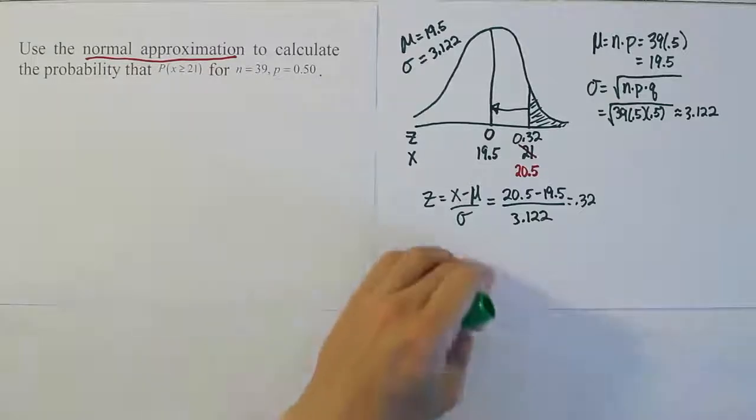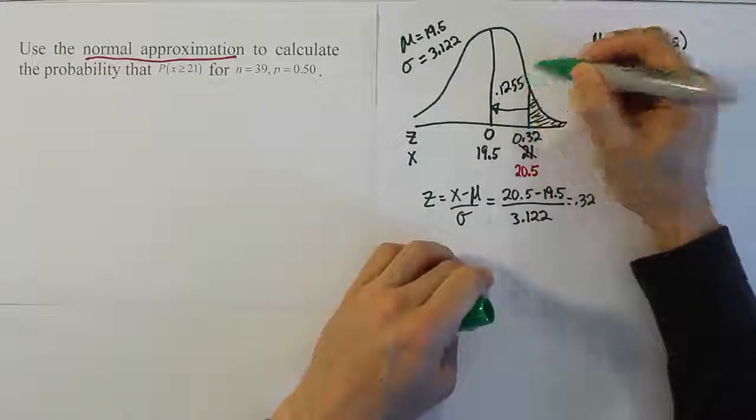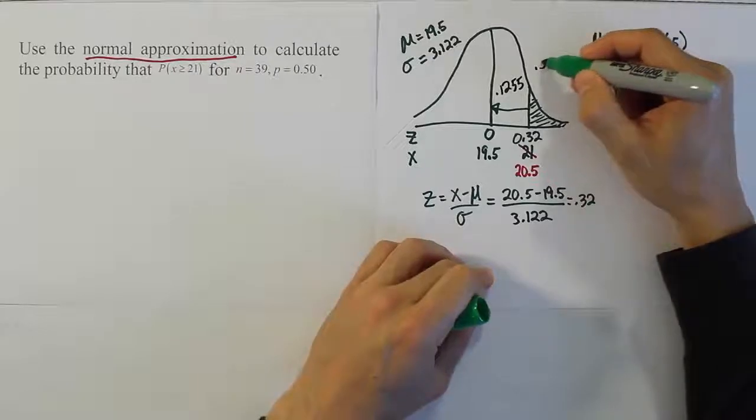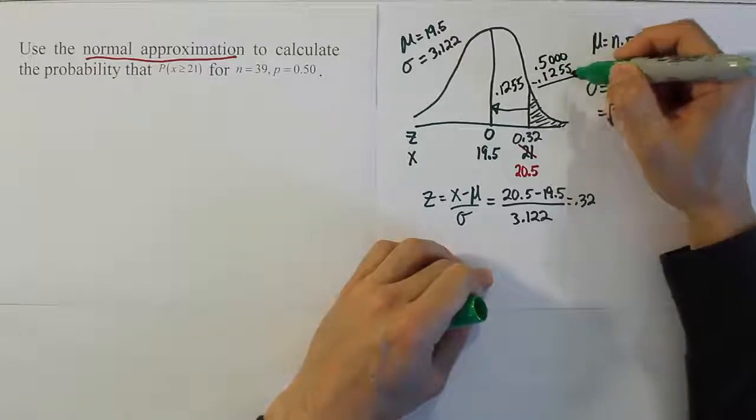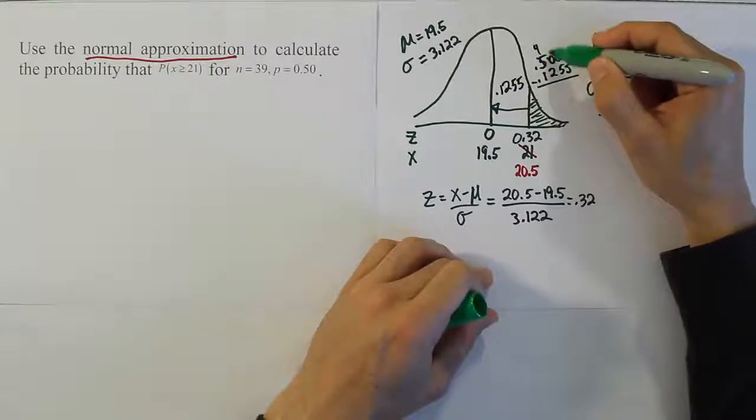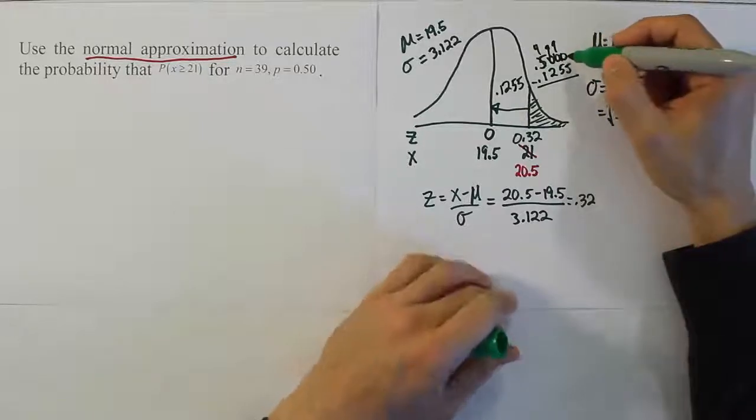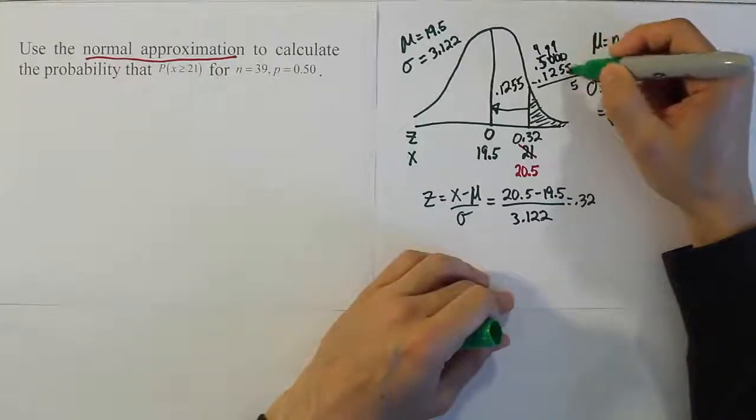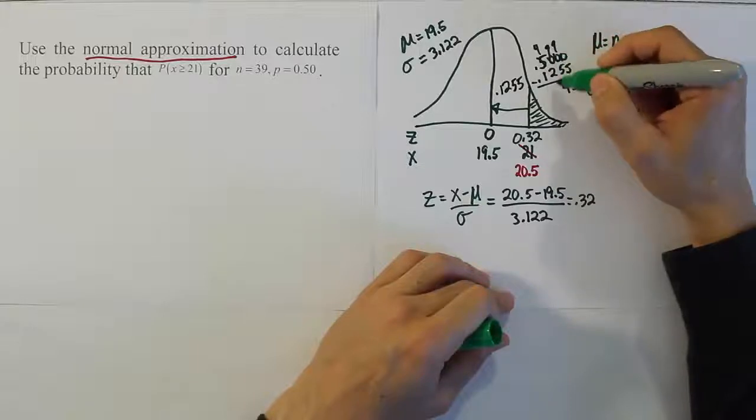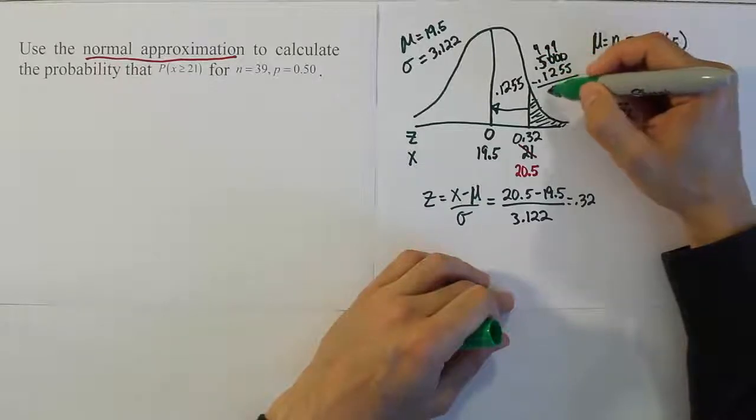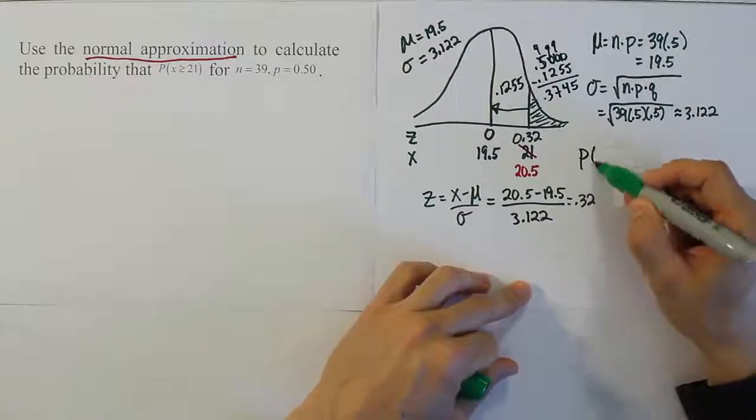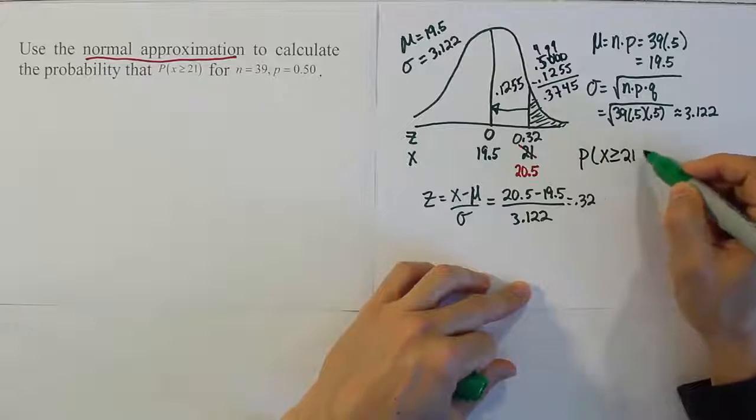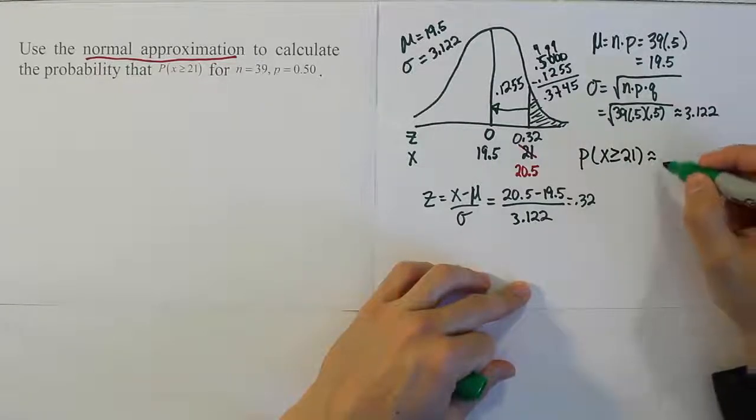So from the table we got the answer 0.1255. And then to get the tail area, we'll do 0.5 minus 0.1255. When we do the subtraction, we borrow here. We get 4, 9, 9, 10. So 10 minus 5 is 5, 9 minus 5 is 4, 9 minus 2 is 7, 4 minus 1 is 3. So the answer is 37.45%. The probability that x is greater than 21 is approximately equal to 37.45%.